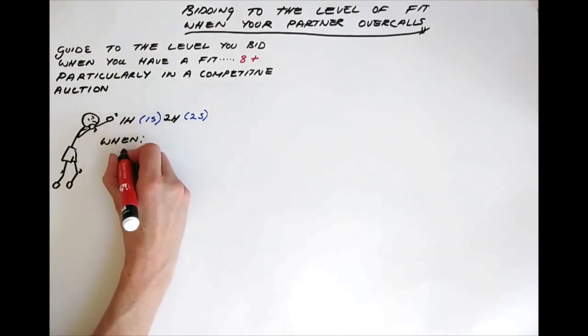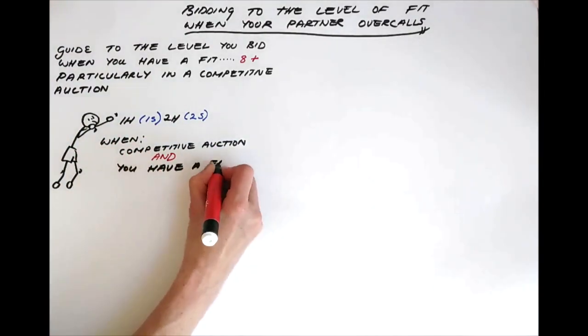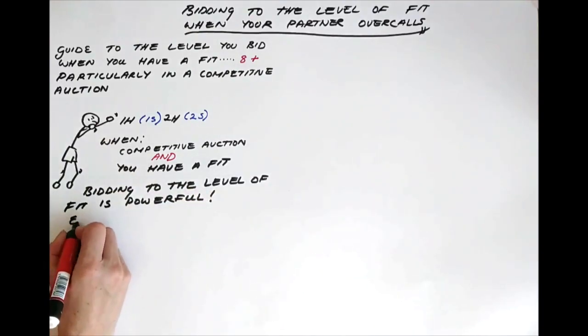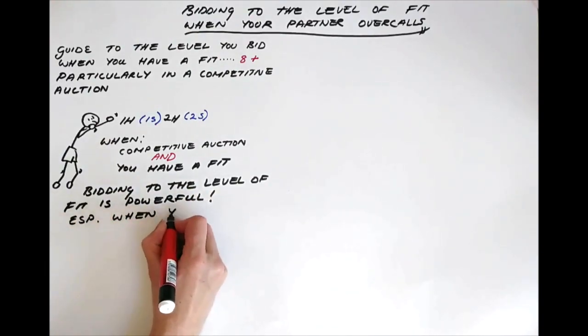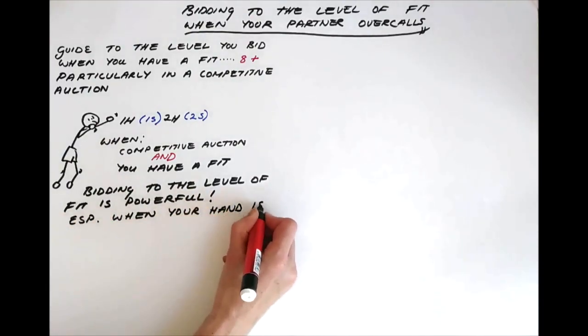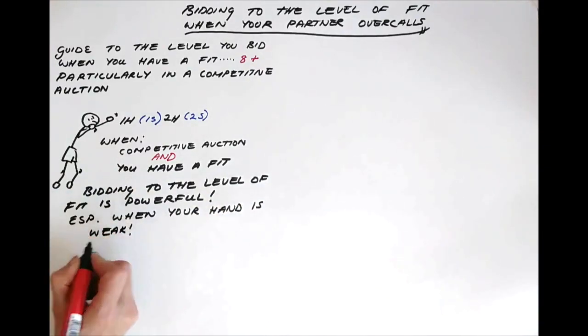So when you are in a competitive auction and have a known fit with your partner, bidding to the level of fit is a very powerful tool, especially when your hand is weak. Say the opponents open a heart, your partner overcalls a spade and then the responder bids two hearts, what should you bid next?